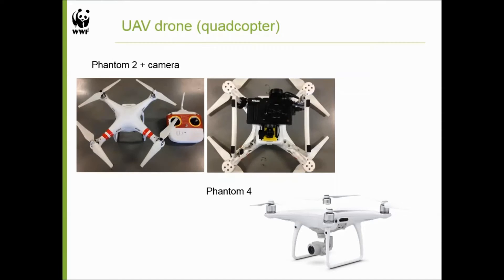For the UAV, I initially used the old version of DJI Phantom 2. At the time, it didn't have a fancy camera, so I additionally attached a digital camera — a Nikon CoolPix — with GPS attached, and flew over my site. But right now, Phantom 4 has a built-in camera of pretty good quality, similar to GoPro. So we don't need to attach an additional camera — we can use the UAV drone's camera as is. Just fly the drone and take the photos.